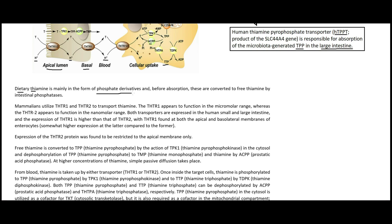Dietary thiamine is mainly in the form of phosphate derivatives, and before absorption these are converted to free thiamine by intestinal phosphatases — enzymes that remove phosphates, whereas kinases add phosphates. Mammals utilize THTR1 and THTR2 to transport thiamine: THTR1 appears to function at a micromolar range, while THTR2 functions at a nanomolar range, meaning THTR2 binds thiamine much more tightly and becomes saturated at lower concentrations.